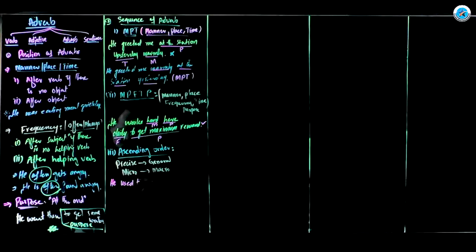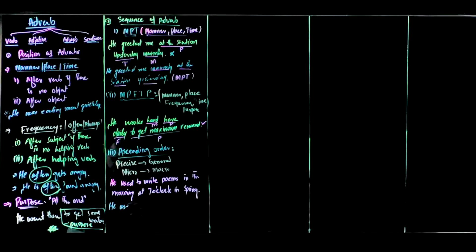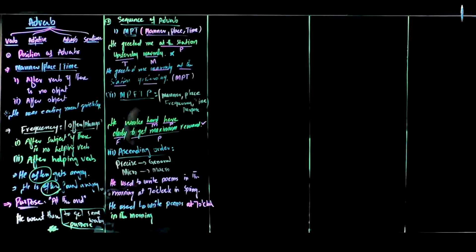In ascending order, time expressions go from smallest to largest unit. For example: 'He used to write poems at seven o'clock in the morning in spring.' Here the time adverbs ascend from the specific time, to time of day, to season. This is called ascending order.